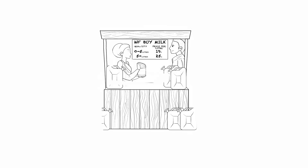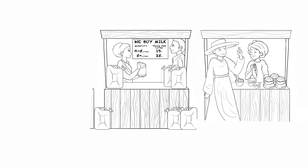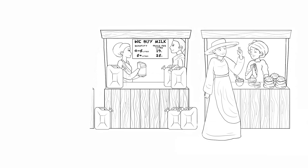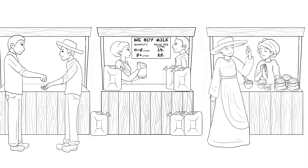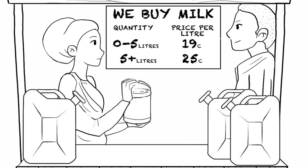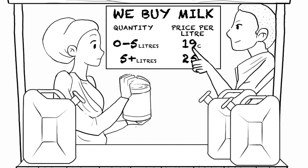Market systems development is different. Its practitioners see that even poor people routinely engage in markets to buy goods and services and to earn income. They also recognize that many markets fail to work effectively or fairly, but seek practical ways to make them work better.